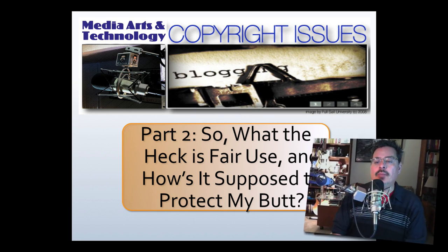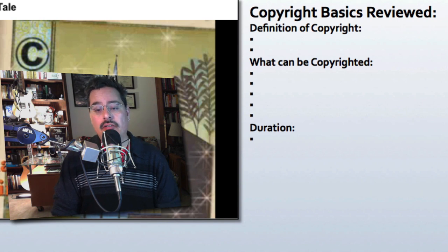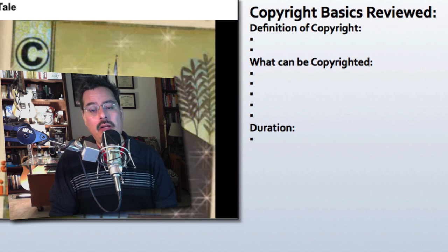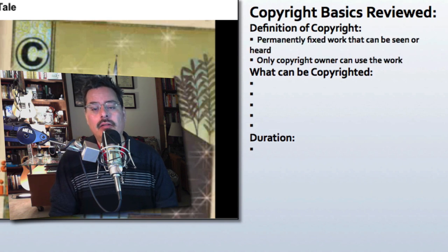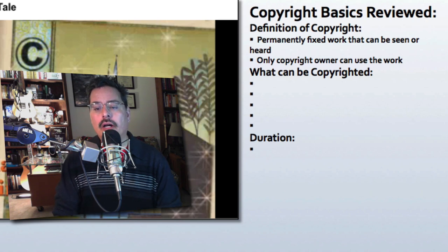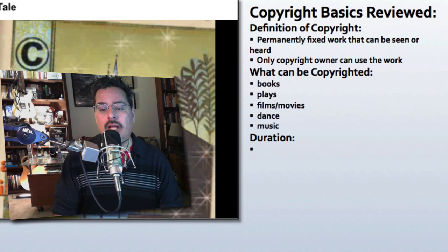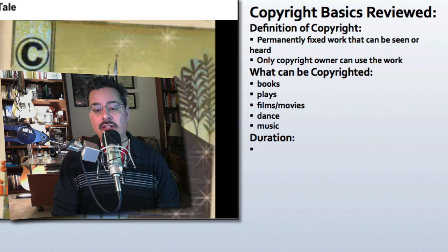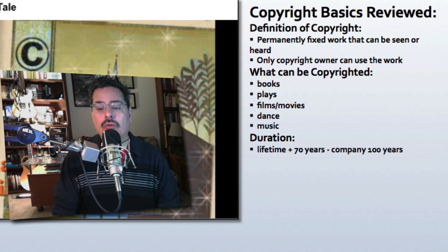Let's talk about the video you just saw — the Fair Use Fairy Tale. To start, let's recap copyright basics from our last session, Part One. The definition of copyright: a permanently fixed work that can be seen or heard, only the copyright owner can use the work, others need to ask for permission. What can be copyrighted: books, plays, films, movies, dance, and music. How long does this last: lifetime plus 70 years, or for a company, 100 years.